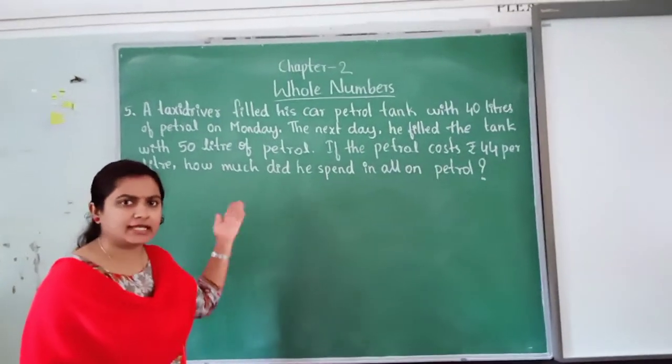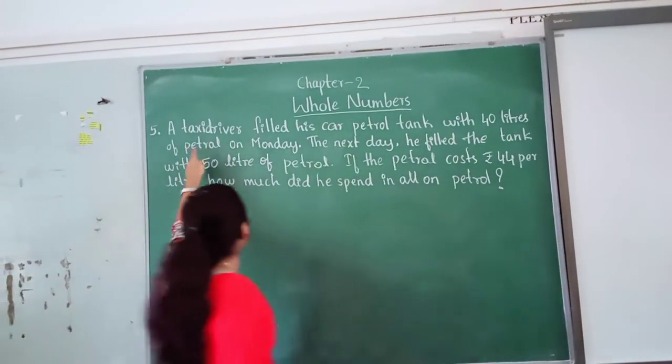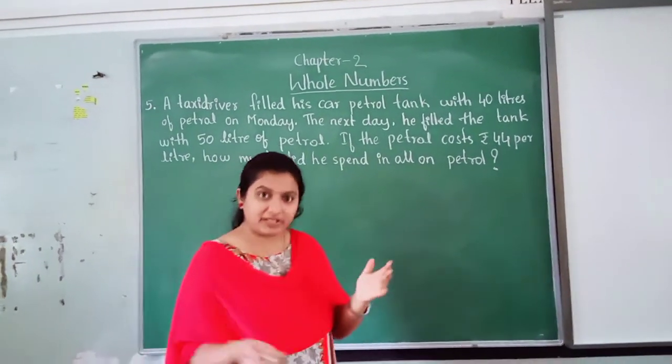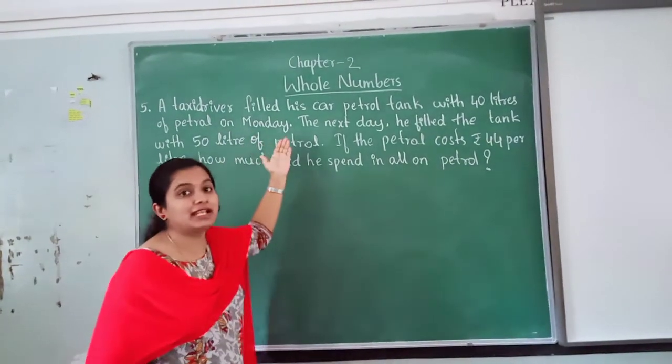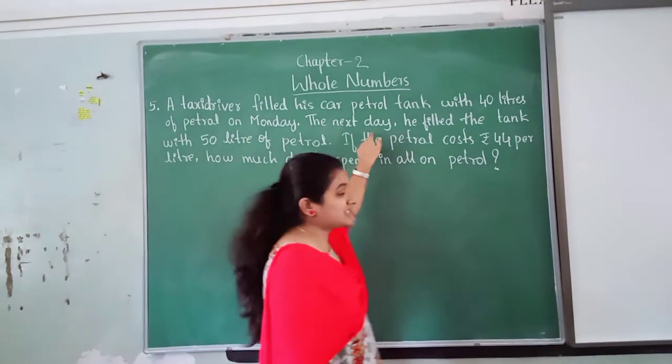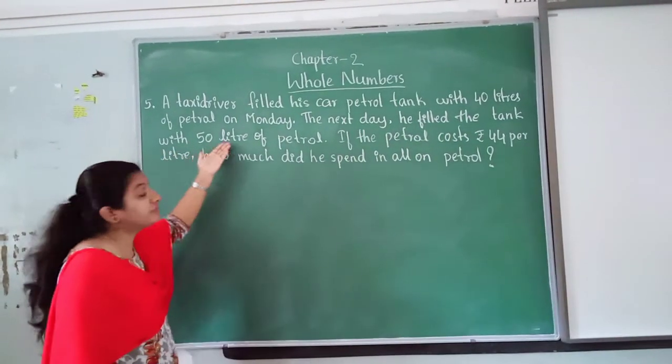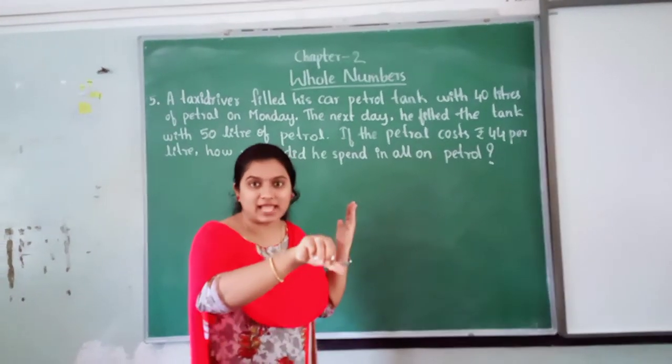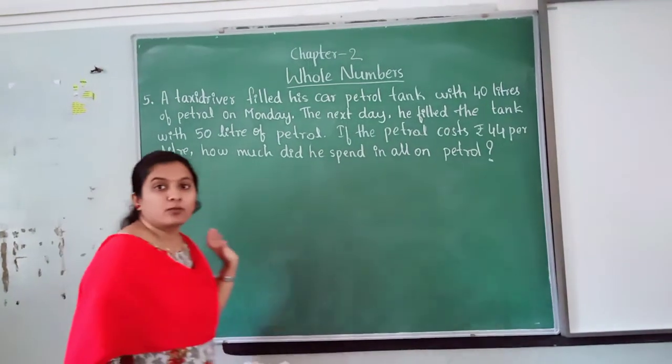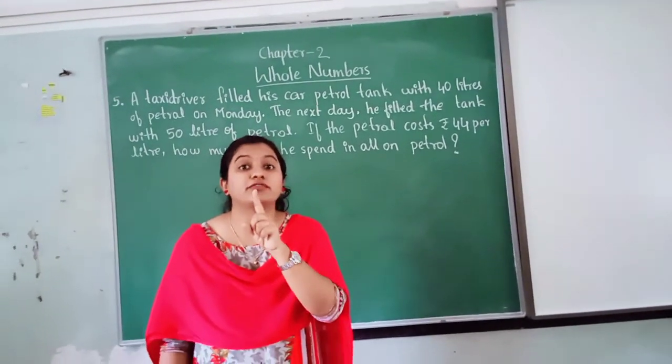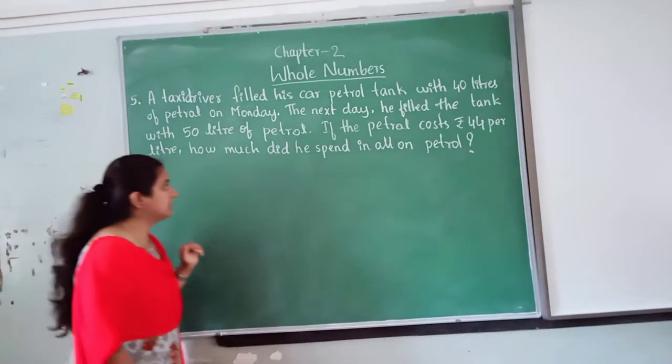Here is your word problem. I will read the question. Look at the board carefully. A taxi driver filled his car petrol tank with 40 litre of petrol on Monday. One taxi driver is there. He filled petrol to his car. How much he filled? What is the quantity? 40 litre petrol he filled on Monday. The next day, next day means which is the next day of Monday? Tuesday. Tuesday, he filled the tank with 50 litre of petrol. If the petrol cost 44 rupees per litre. For 1 litre. Per litre means what? 1 litre. For 1 litre, 44 rupees. What is the total cost of 40 plus 50 litre.